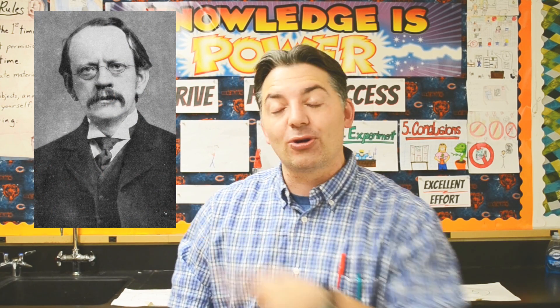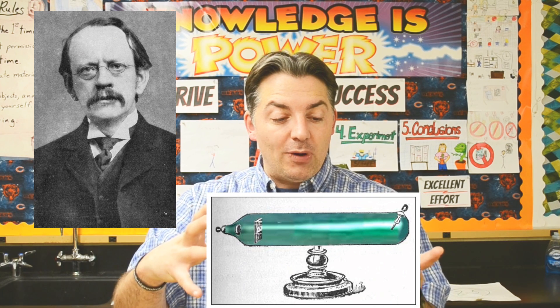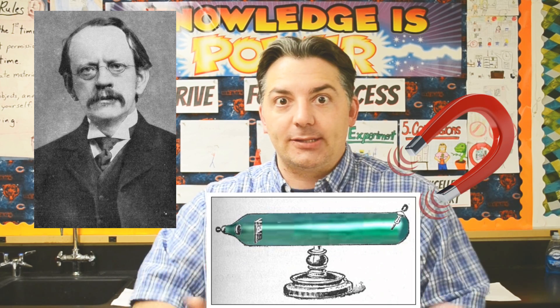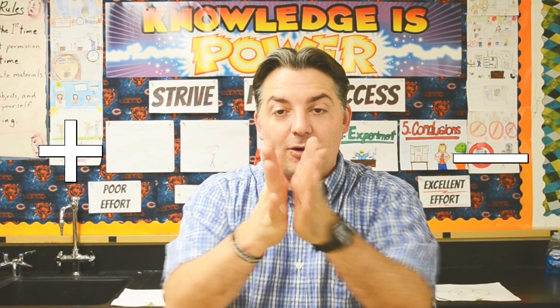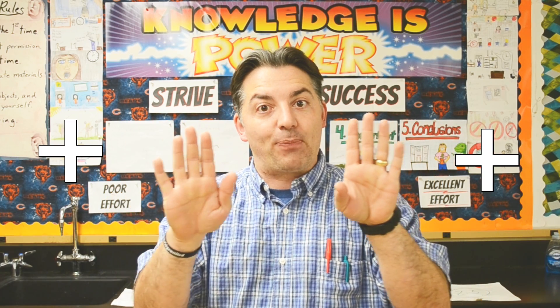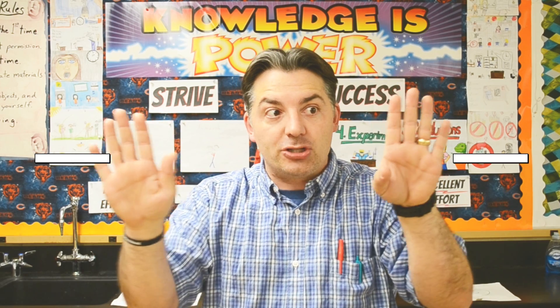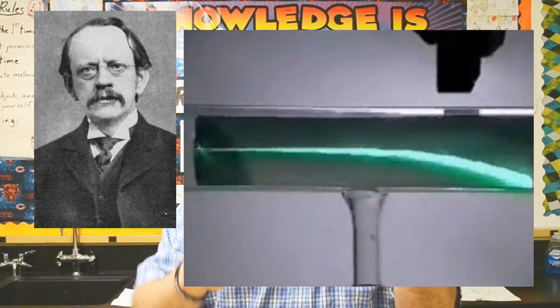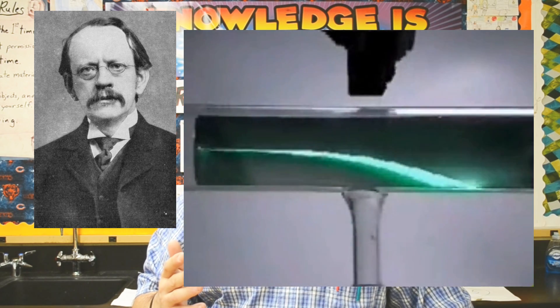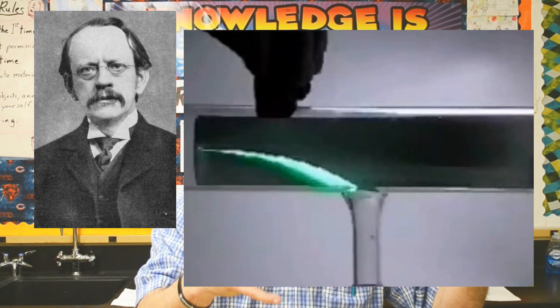Let's jump forward to 1897, to J.J. Thompson. J.J. Thompson took Crookes' tube and asked: what are these particles? What if we expose them to magnetic fields — does that change them? We know with magnets that opposites attract: positive and negative go together, but like charges repel. What Thompson found was that when he had a positive charge close to this stream of particles, they bent towards it. When he had a negative charge near that stream, those particles bent away. So those particles flowing in the cathode ray tube had a negative charge.